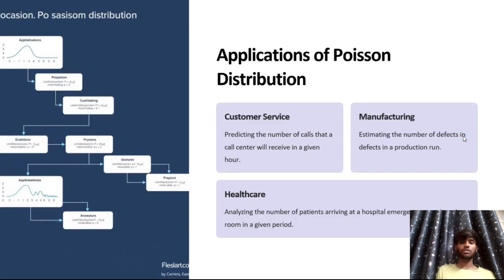Applications of Poisson distributions include customer service, manufacturing, and healthcare. In customer service, it is used for predicting the number of calls a call center will receive in a given hour. In manufacturing, it estimates the number of defects in a production run. In healthcare, it analyzes the number of patients arriving in a hospital emergency room in a given period.